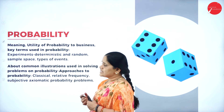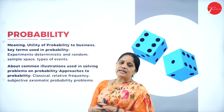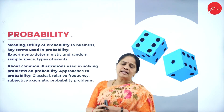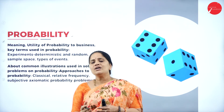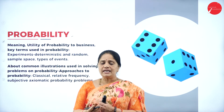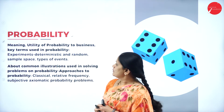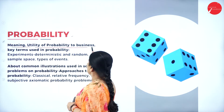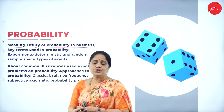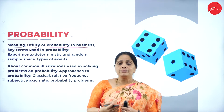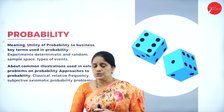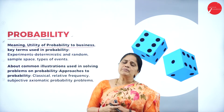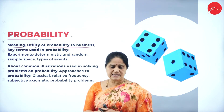In unit 5, it is related to probability. What is probability? It is the happening or the non-happening of an event. We will study the meaning of probability and the utility of probability to business. With the help of probability, we will be able to forecast the business result.